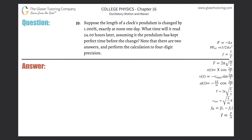Number 33. Suppose the length of a clock's pendulum is changed by 1%, exactly at noon one day. What time will it read 24 hours later, assuming the pendulum has kept perfect time before the change? Note there are two answers.